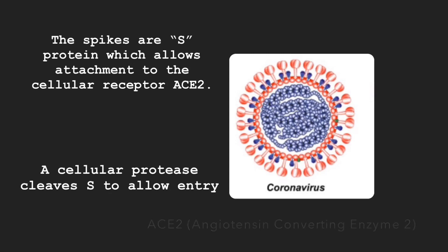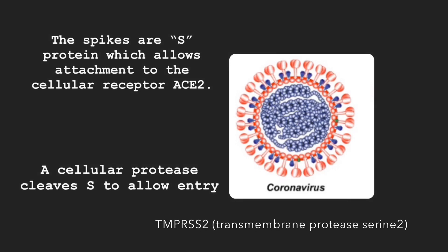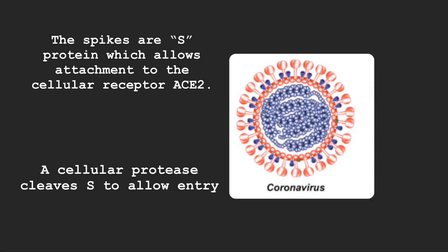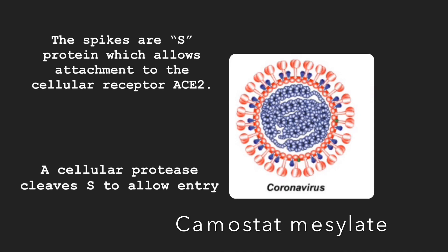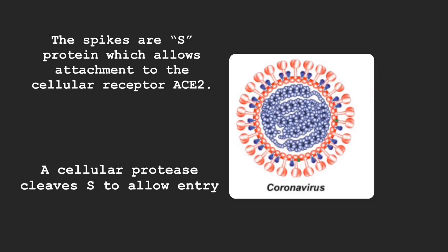Beyond binding to ACE2, a different cellular protease cleaves and primes the S protein to enable entry. For COVID-19, this cellular protease is TMPRSS2, or transmembrane protease serine 2. In a recent publication in the journal Cell, a clinically proven serine protease inhibitor, camostat mesylate, was shown to inhibit infection of cells with COVID-19 in an in-vitro assay. It will be interesting to see if this leads to the development of new antivirals.